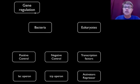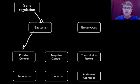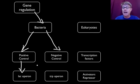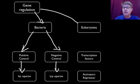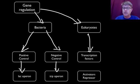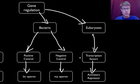As far as gene regulation examples, most of what we know comes from bacteria. I'll talk about positive and negative control. The positive control example is the lac operon, which deals with lactose. The negative control is the trp operon, which deals with tryptophan. And finally I'll show you what we know about eukaryotic gene regulation and how they use transcription factors as activators and repressors to either express a gene or not.